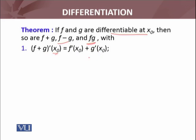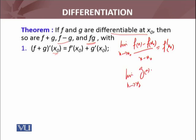Let me give you a small idea of how to prove this. Now f and g are differentiable, it means lim(x→x₀) [f(x) - f(x₀)]/(x - x₀) = f'(x₀). This limit exists and equals this, which is the definition. Similarly, lim(x→x₀) [g(x) - g(x₀)]/(x - x₀) = g'(x₀). We have to prove that f + g is differentiable at x = x₀.